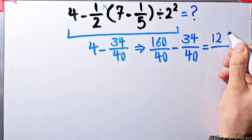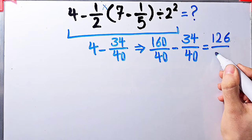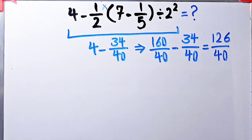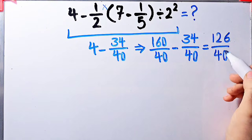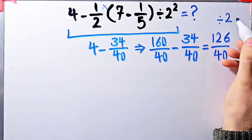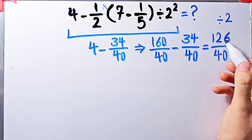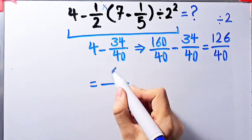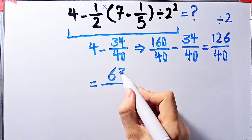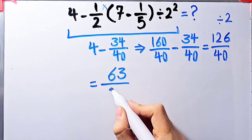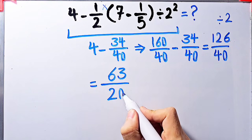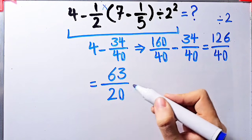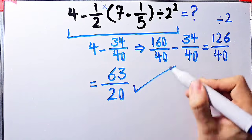The final answer of this question equals 126 over 40. Because the numerator and the denominator of this fraction are divisible by 2, we divide both by 2. 126 divided by 2 equals 63, and 40 divided by 2 equals 20. The final answer of this question equals 63 over 20.